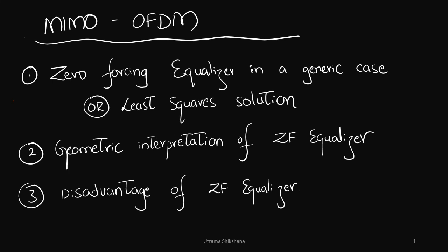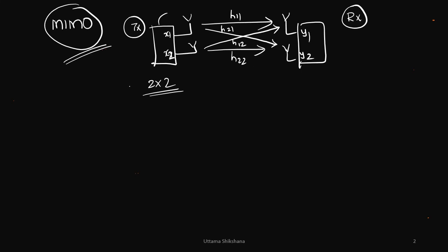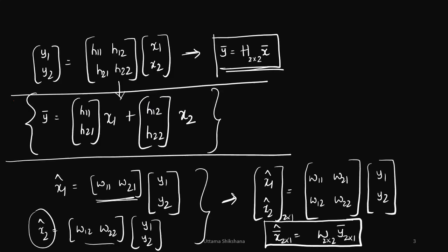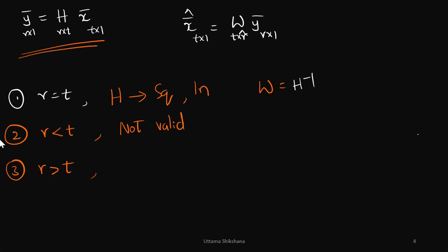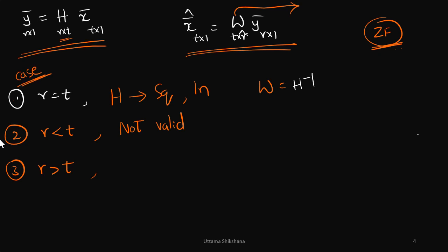In the earlier videos, I had considered MIMO which is just 2×2, but in this video we will consider the generic case which is R×T. These are the two important equations. I have taken them in a generic way with respect to R×T dimensions. We need to figure out the solution to find the W matrix under three conditions.